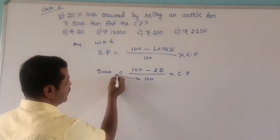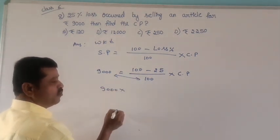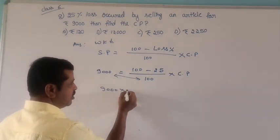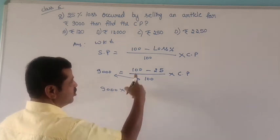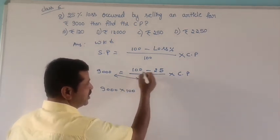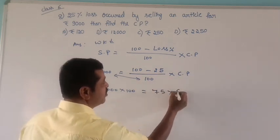Cross multiplication. 9000 into 100 is equal to 100 minus 25, which is 75, into CP.